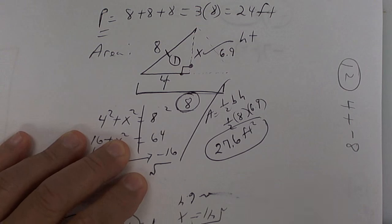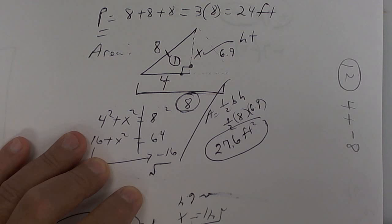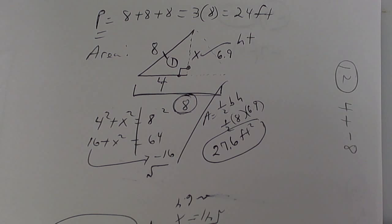That one was a little harder. I had to figure out the height. Perimeter was easy — it was just 3 eights. But for the height, I had to take the base, cut it in half, and use Pythagorean's theorem to get the height. Again, that one was a little harder. If you still have to pass the Perth test, you need to try to understand some of this algebra.